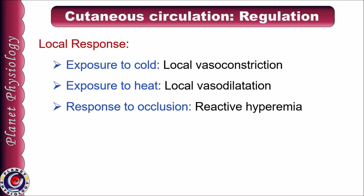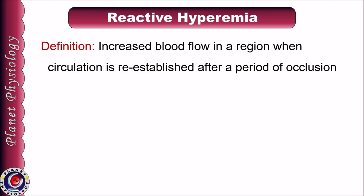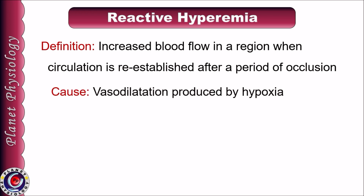Cutaneous blood flow also shows localized responses limited to specific parts of the body. For example, localized exposure to cold causes local vasoconstriction in that part, and localized exposure to heat induces local vasodilation. If blood supply to any localized region is occluded, cutaneous blood flow shows reactive hyperemia — defined as increased blood flow in a region when circulation is re-established after a period of occlusion.